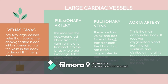The pulmonary veins are four veins, one pair for each lung, that transport oxygenated blood from the lungs toward the left atrium of the heart. The aorta is the main artery — it receives oxygenated blood from the left ventricle and distributes it through all its branches so that it reaches the rest of the body. The vena cavae are two large caliber veins that receive deoxygenated blood from all the veins in the body to deposit it in the right atrium.